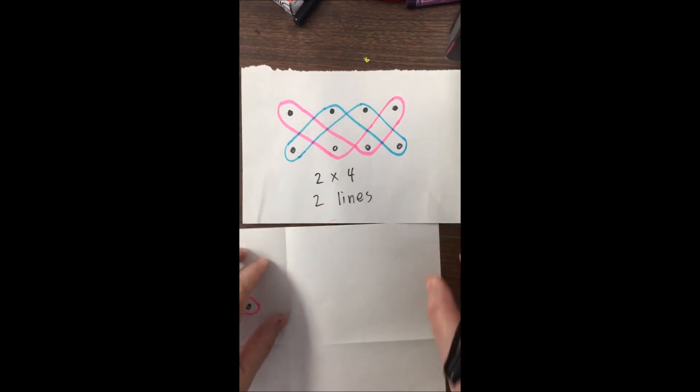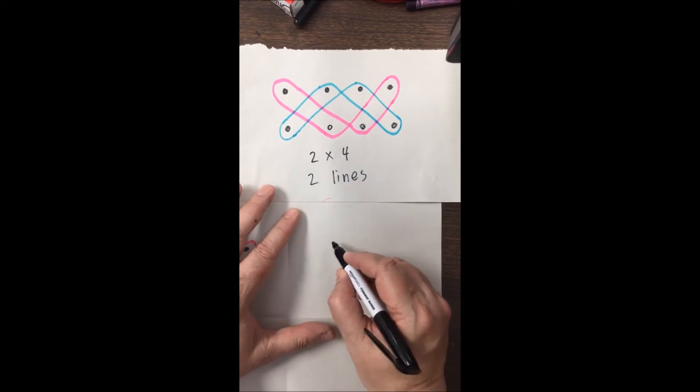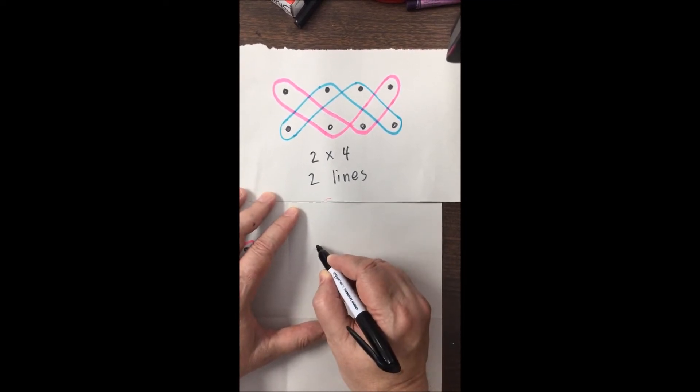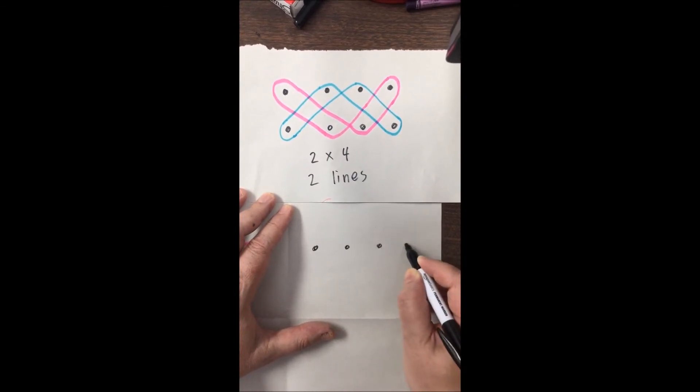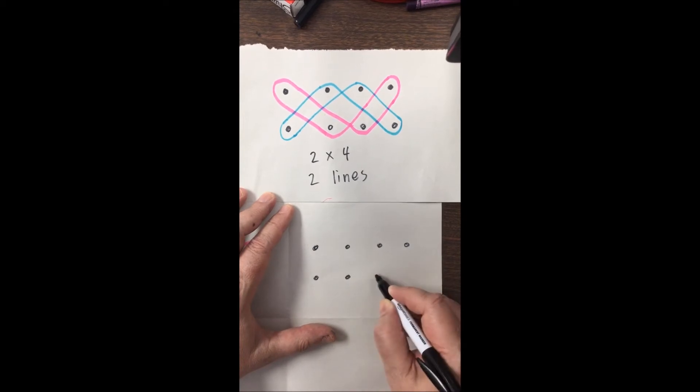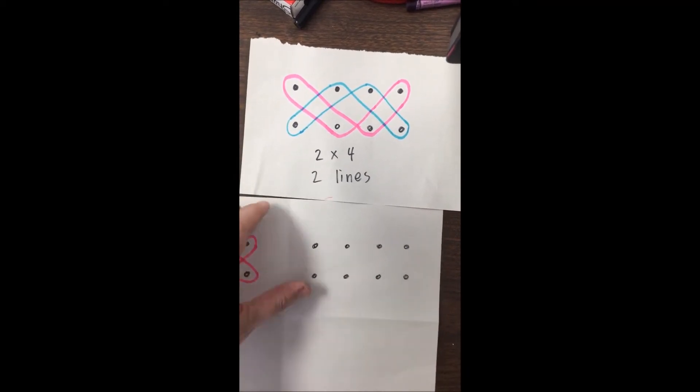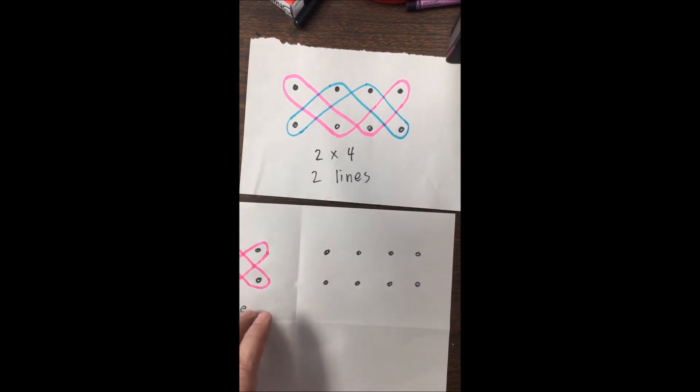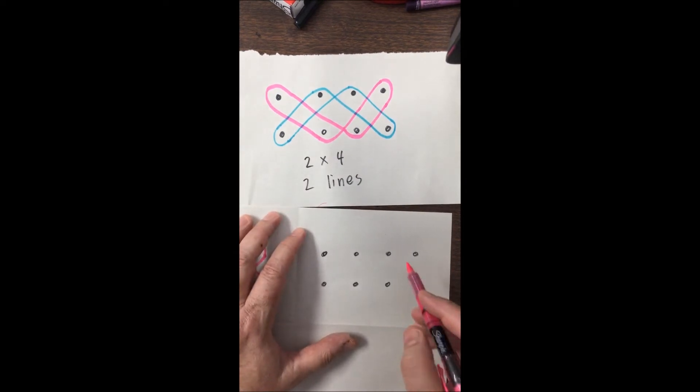Next one we're going to do is two by four and this one is done with two lines. So again make our dots to start off with one two three four and then copy that underneath one two three four. I'm going to use two different markers on this. You don't have to. This is to show you better and just like before you can start anywhere.